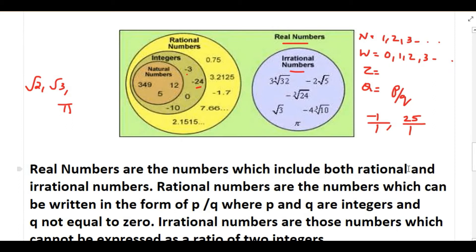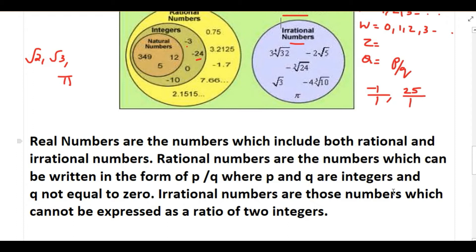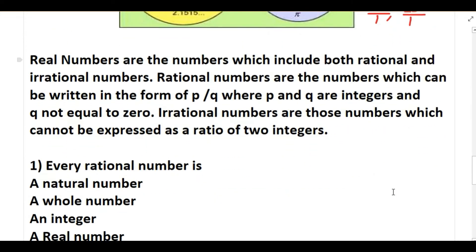All these numbers come under one family called real numbers. Real numbers include both rational and irrational numbers. Rational numbers are the numbers which can be written in the form of p by q where p and q are integers and q is not equal to zero, and irrational numbers are those which cannot be expressed as a ratio of two integers.